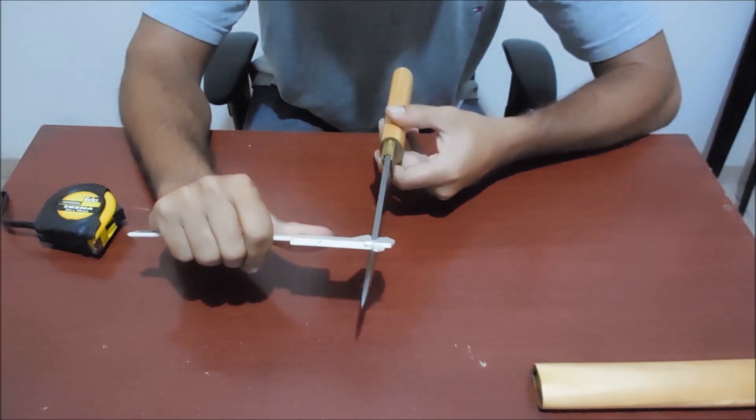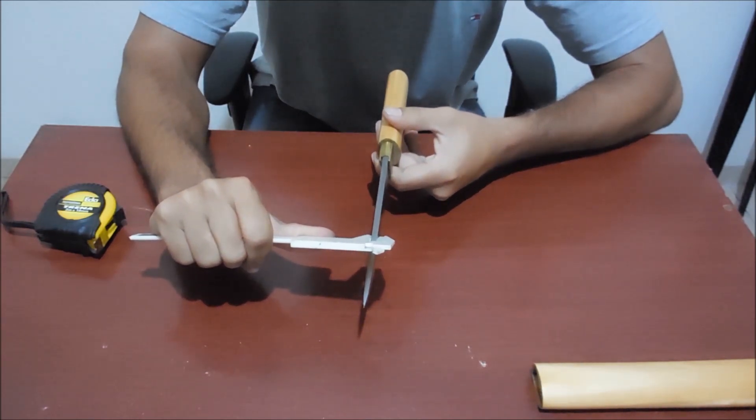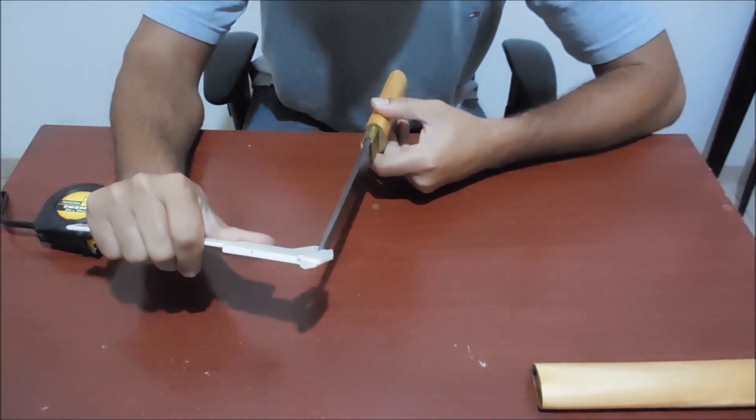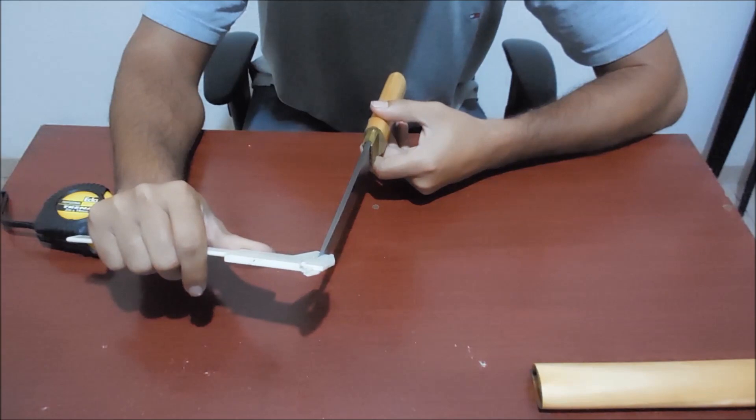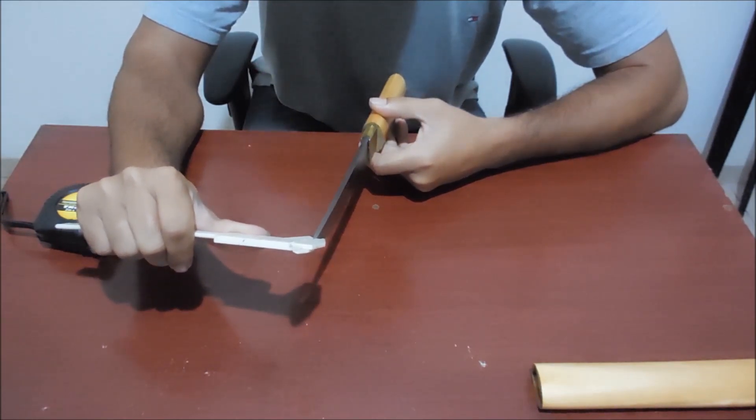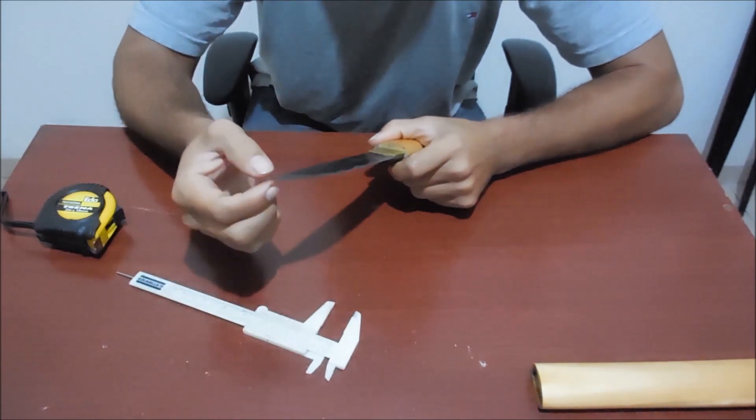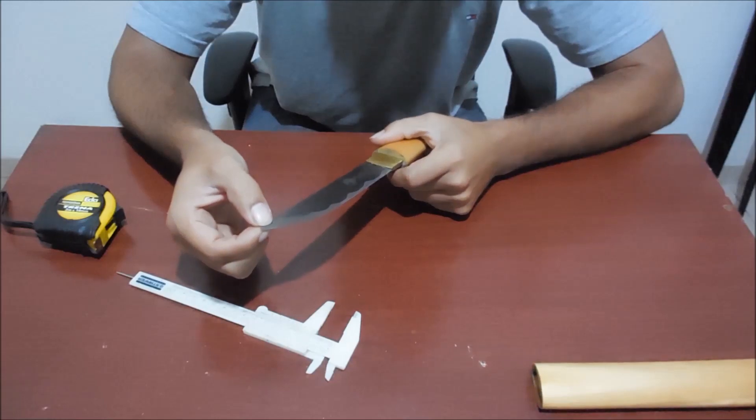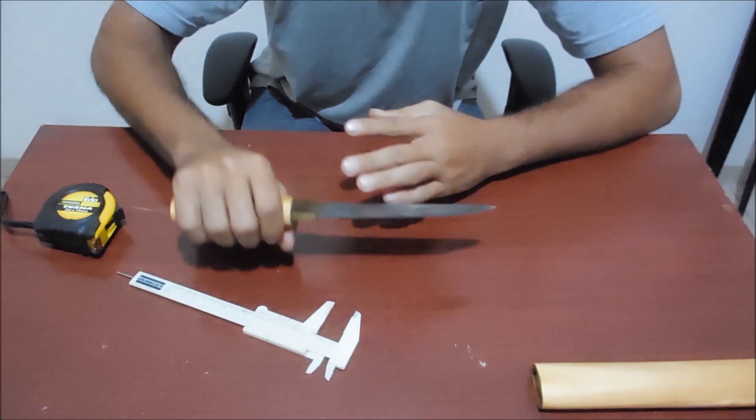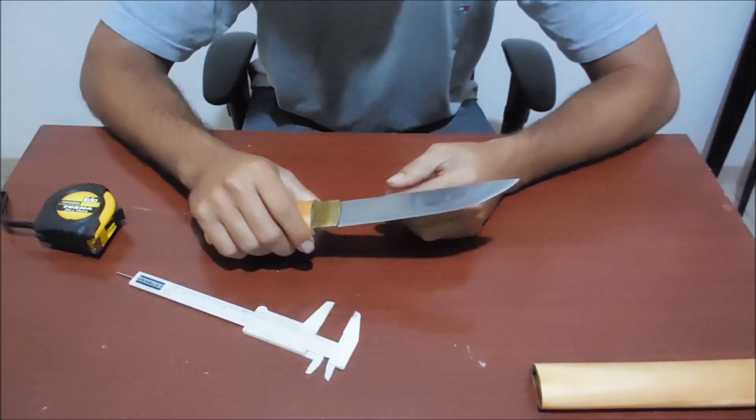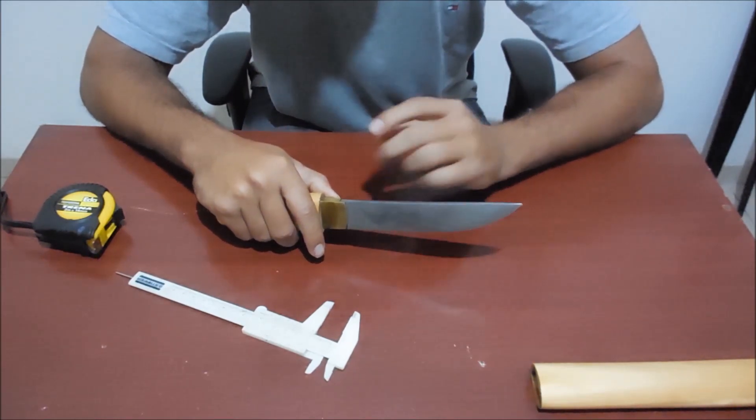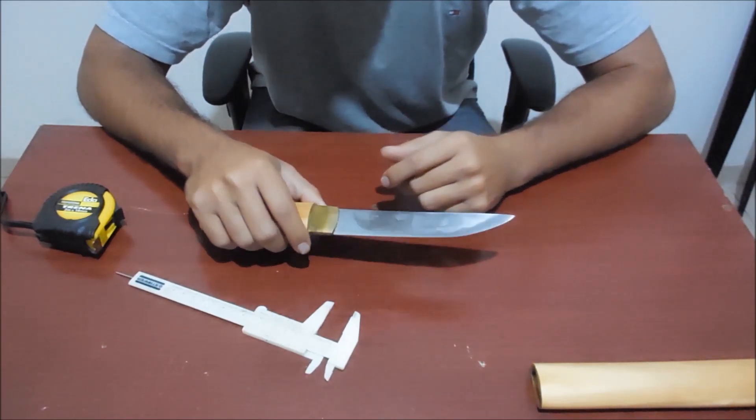Going further, it keeps the same 4.9 mm and it tapers near the point to 1.6 mm near the tip. So a very strong blade. Very suitable for stabbing hard materials. But even being a very thick blade, with almost 5 mm of thickness.